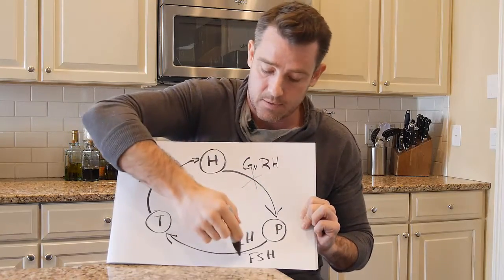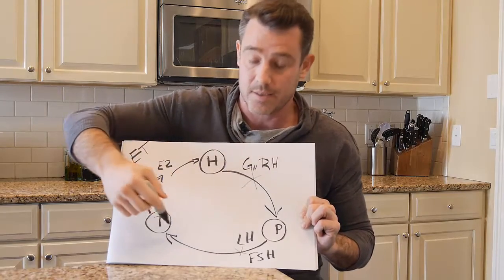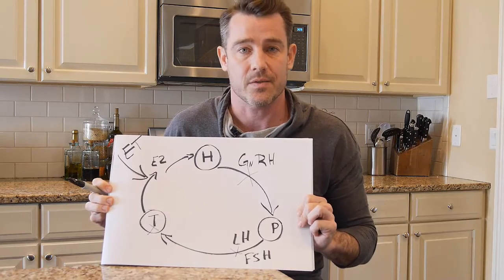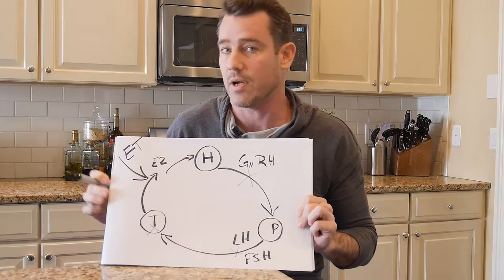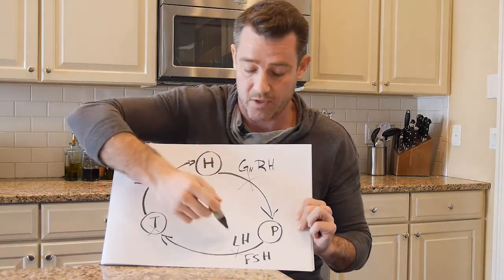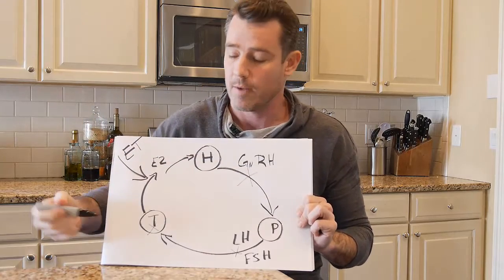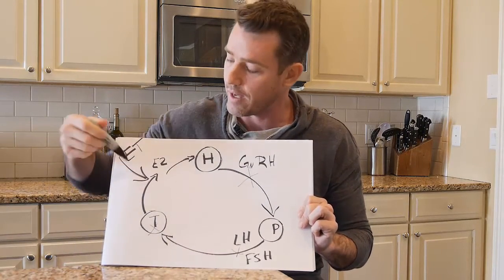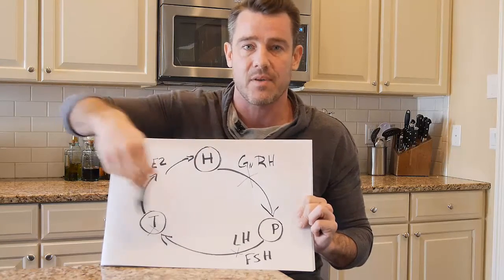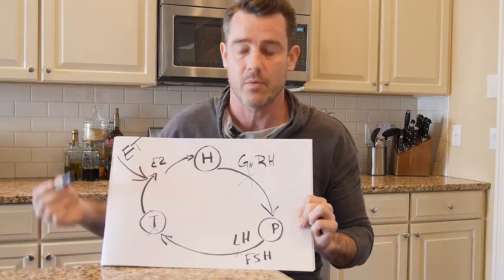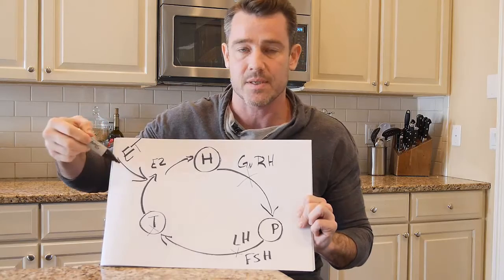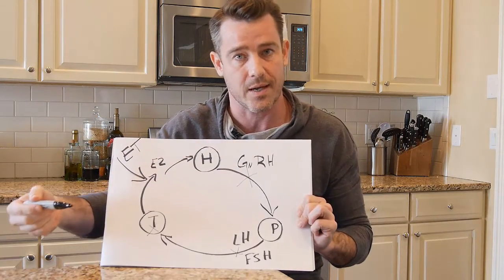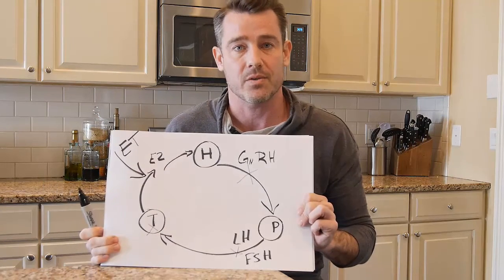None of the HPTA signals fire — no GnRH, no LH, no FSH, no testicular production. This is why, when you get on testosterone replacement for a long time and you're not using HCG — which mimics luteinizing hormone — you have testicular shrinkage and atrophy. That's exactly why. This thing is called a negative feedback loop. We shut the negative feedback loop down because the hypothalamus is seeing plenty of estrogen from the externally introduced testosterone converting into estrogen, so there's no need to create those signaling hormones to tell the testicle to produce testosterone.